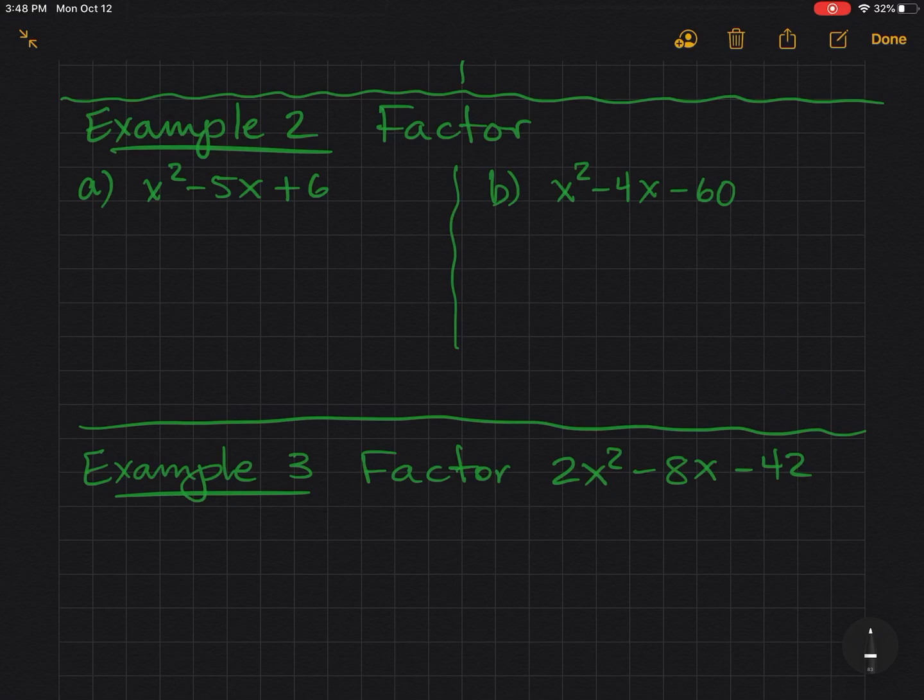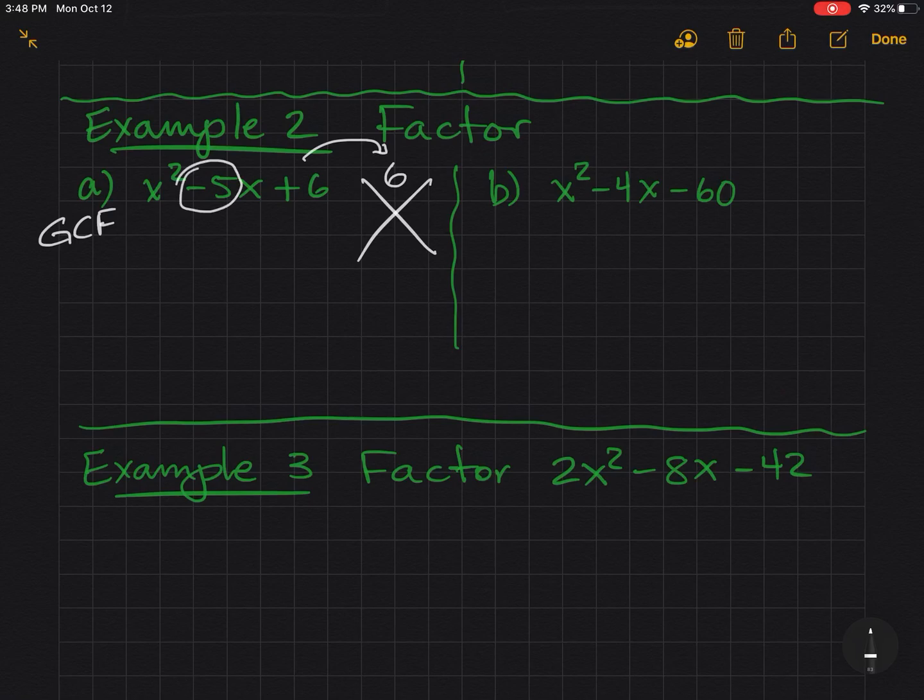For our next example, I'm looking for the GCF first. Always GCF first. There's no GCF. So we're going to try the diamond method. You put C on top. That's the constant term. And you put B on the bottom, always. C on top, B on the bottom. Now I'm looking for two numbers that multiply to positive 6, but add up to negative 5.